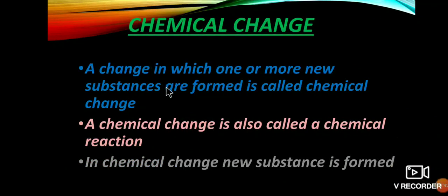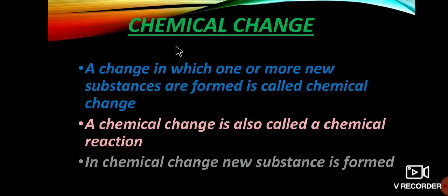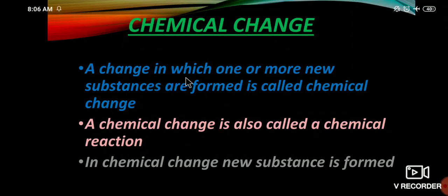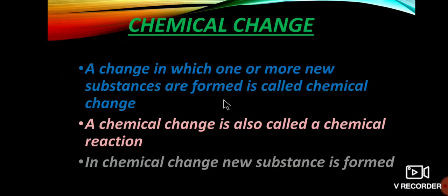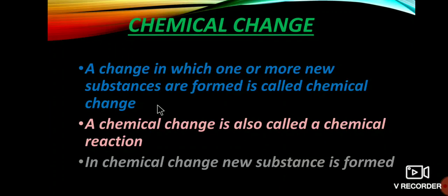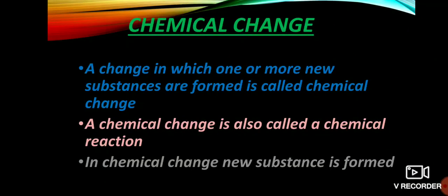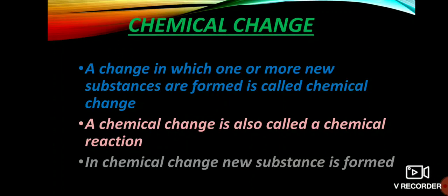For chemical change: a change in which one or more new substances are formed is called a chemical change. For example, burning of paper — we get ash, which is a new substance. When acid and base are mixed, we get a neutralized substance and water, which is also a new substance.